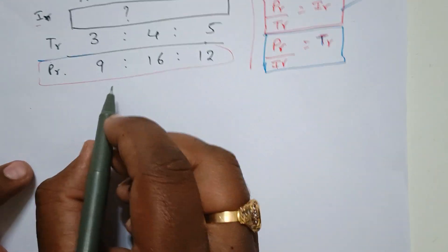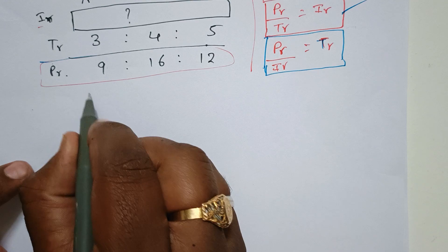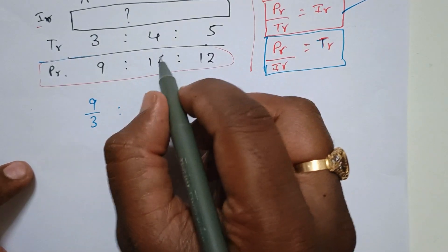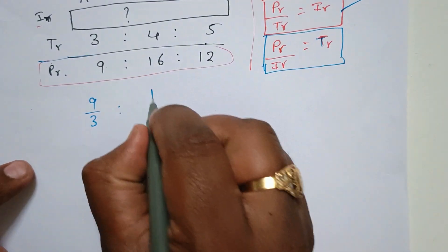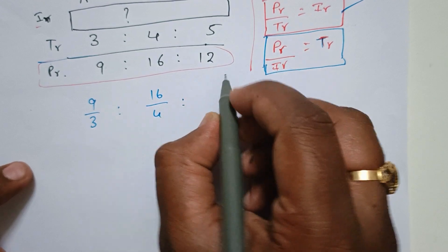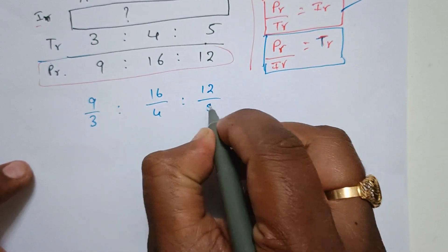First change: A's investment ratio is 9 divided by 3. B's investment ratio is 16 divided by 4. C's investment ratio is 12 divided by 5.